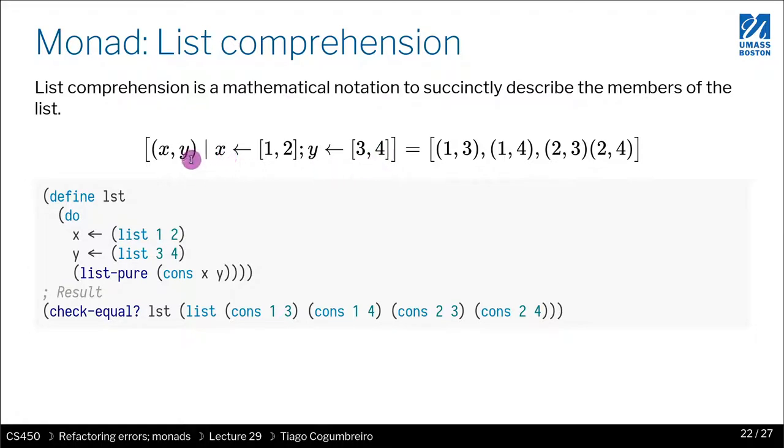What I'm doing is returning the pair x comma y. So essentially what this is returning is the combinations of all, right? So the product of the two pairs. You're going to have (1,3), (1,4), (2,3), and (2,4).